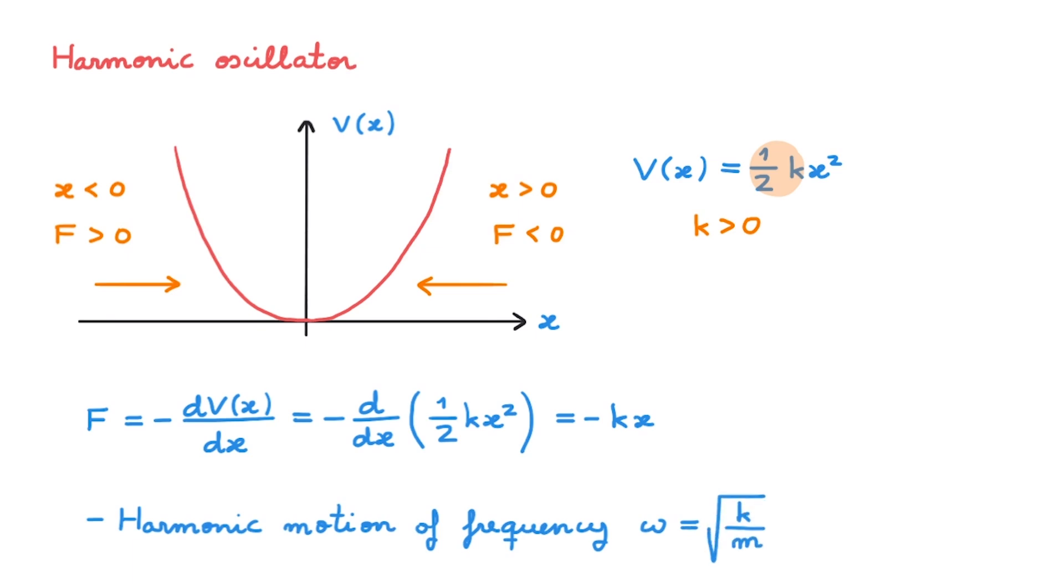With this omega we can rewrite the potential up here like this which is a very commonly used form. Perhaps the most famous classical system undergoing harmonic motion is that of a mass attached to a string and in that context this expression here for the force is called Hooke's law.